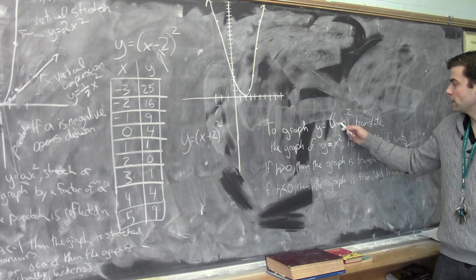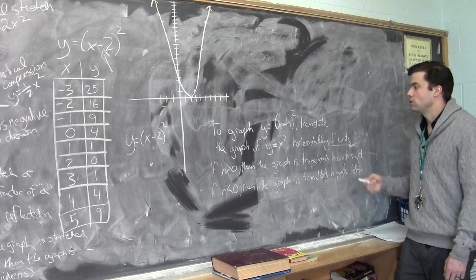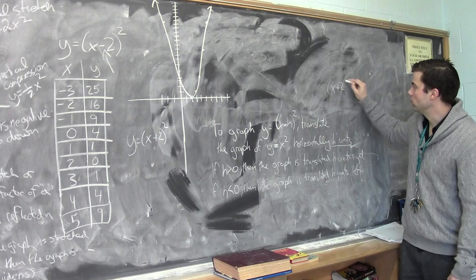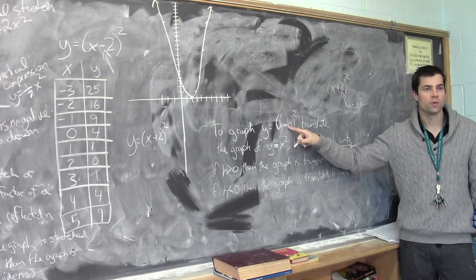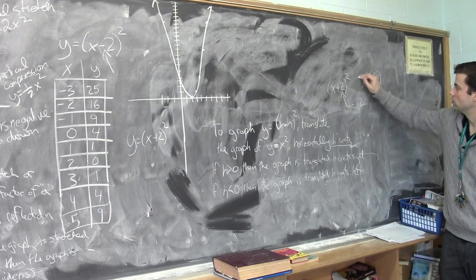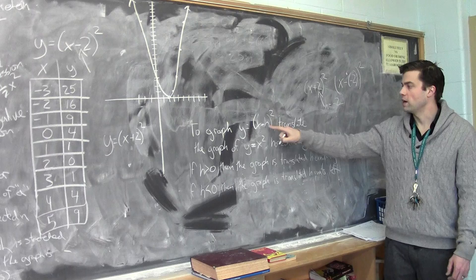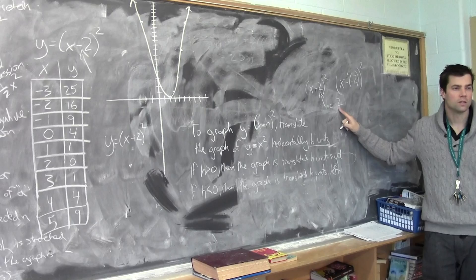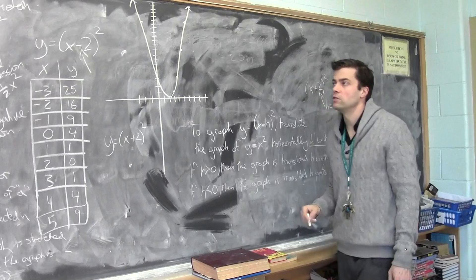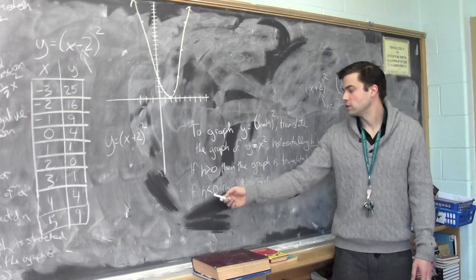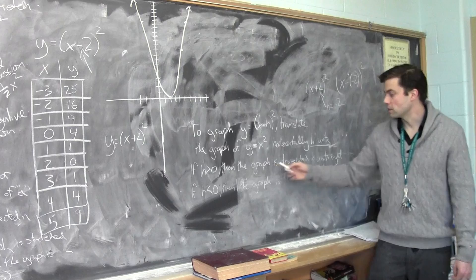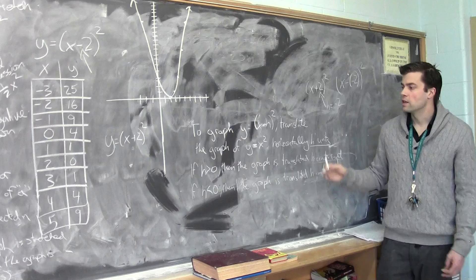To graph y = (x - h)², translate the graph of y = x² horizontally h units. So if the equation looks like (x + 2)², in this case h is actually equal to -2, to agree with that equation — because it would be x minus (-2) squared, that's why it's x plus 2. So h equals -2. That means you translate it to the right — it's a little confusing, but the direction goes opposite from the equation to the graph. Minus 2 in the equation means it moves right 2 units; plus 2 moves left.